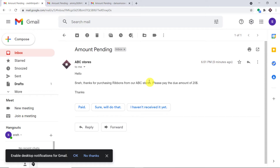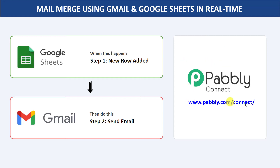You must be thinking, how did I manage to send the email from Google Sheets to Gmail? Basically, we have used an integration and automation software called Pabbly Connect that integrates Google Sheets and Gmail. The best part of using Pabbly Connect is there is no need for coding skills or programming knowledge. It can be done easily.